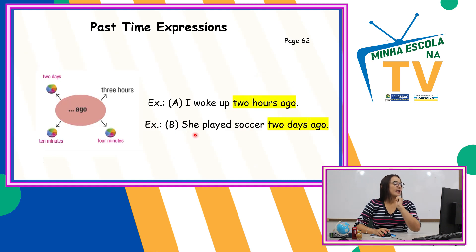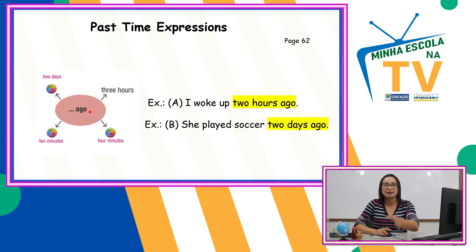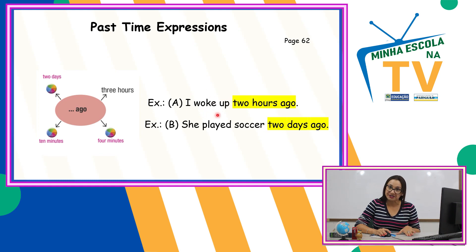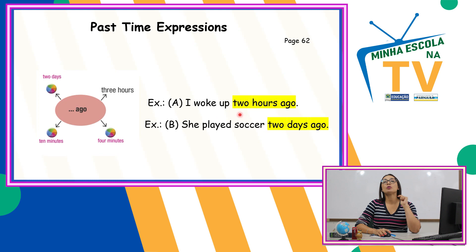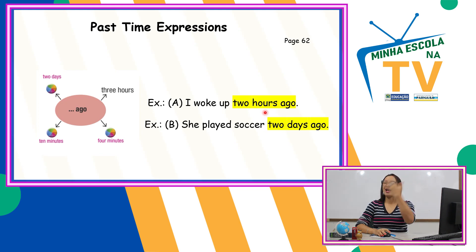Existem outras expressões. A palavra 'ago' significa, ao pé da letra, 'atrás.' Por exemplo, 'two days ago' — dois dias atrás. Os verbos que estão ali vão ficar no passado para combinar com essa expressão. 'I woke up two hours ago' — eu levantei há duas horas atrás. Esse verbo está no passado, ele não tem ED porque é irregular. Two hours ago é uma expressão que indica passado. Observe que ela fica geralmente no final da sentença.